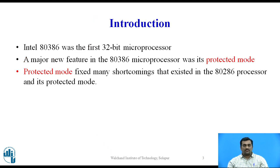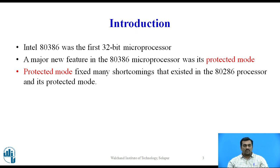Intel 80386 was the first 32-bit microprocessor. A major new feature in the 80386 microprocessor was its protected mode. Although the protected mode was also available in the 80286 microprocessor, the protected mode in the 80386 is very advanced and fixed many shortcomings that existed in the 80286 microprocessor.